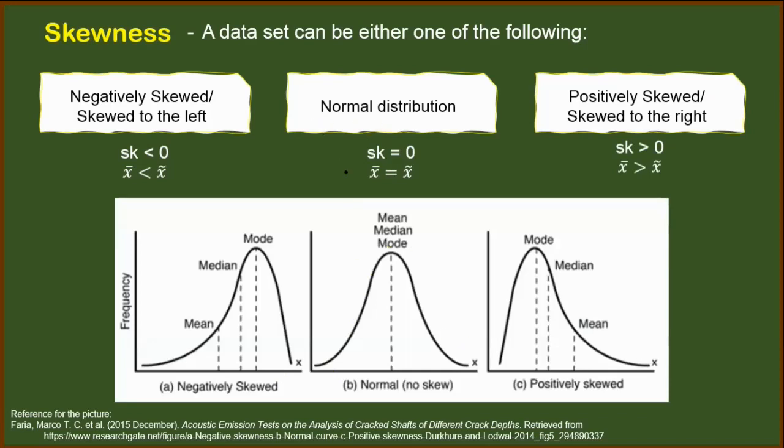So if you may notice for the normal distribution, the mean, median, and mode are all in the center. They are equal to each other and it is symmetrical. The distribution is symmetrical along this mean, median, and mode, meaning the left side mirrors the right side of this distribution.